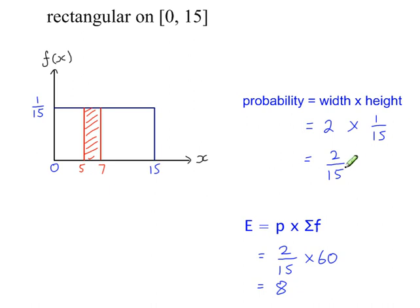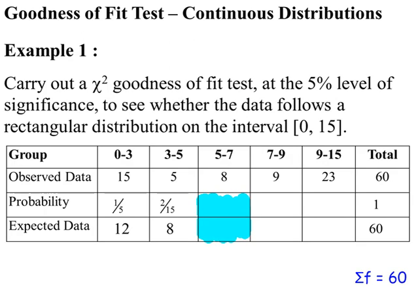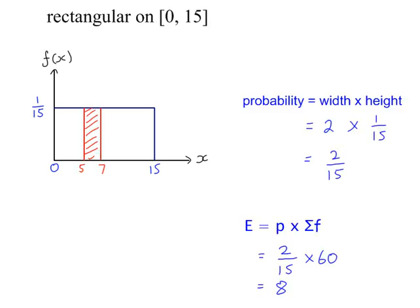So the probability for this area is 2 over 15. So using our formula for calculating expected frequencies, the probability times the total frequency gives 8. So we've worked out the probability and the expected frequency here is 8. So this is for the class 5 to 7.